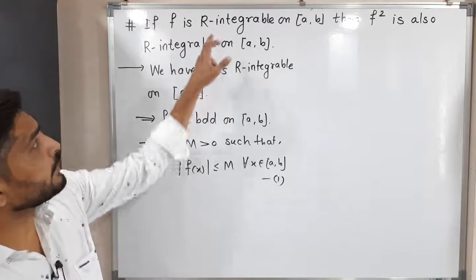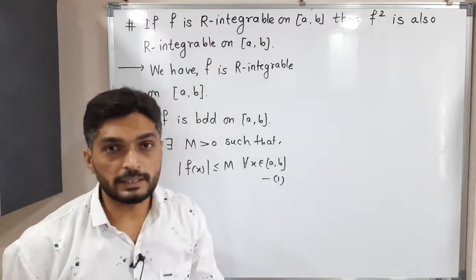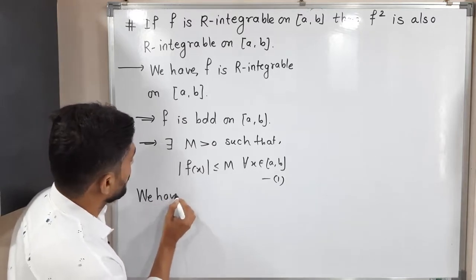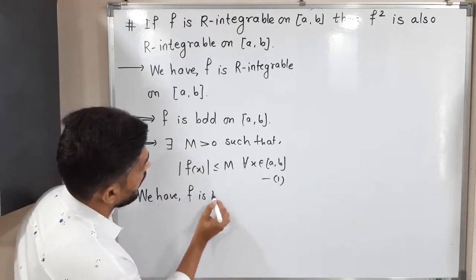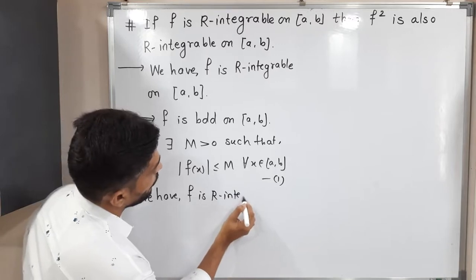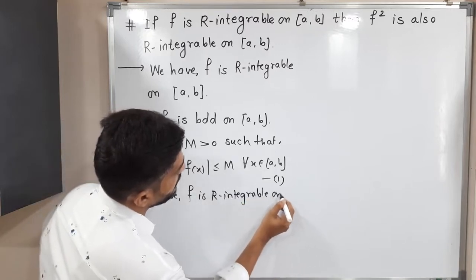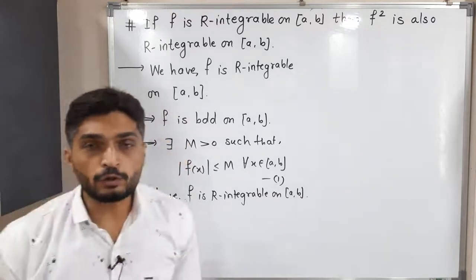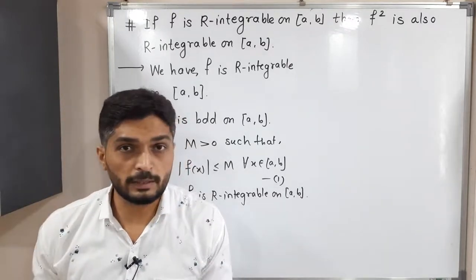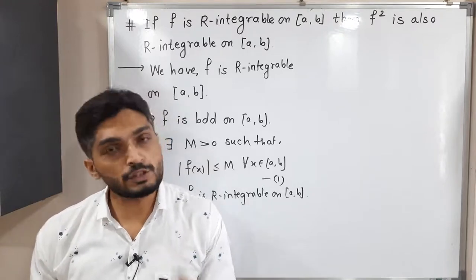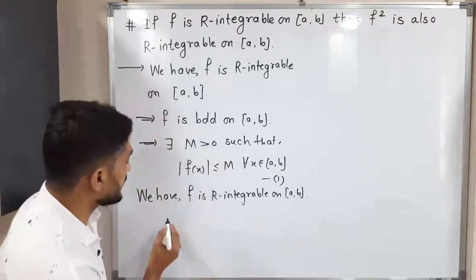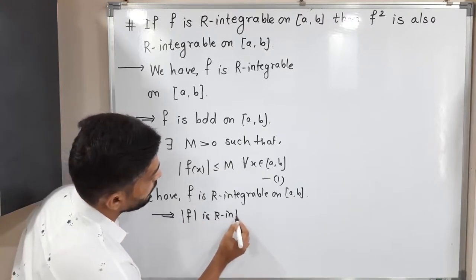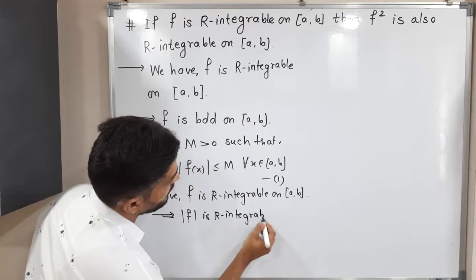Going back to the given information: f is Riemann integrable on [a,b]. In a previous video, we already proved that if a function is Riemann integrable, then the modulus of that function is also Riemann integrable. So we can write: |f| is Riemann integrable on closed interval [a,b].